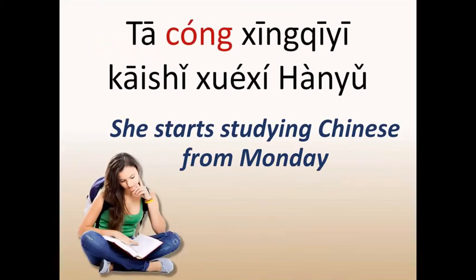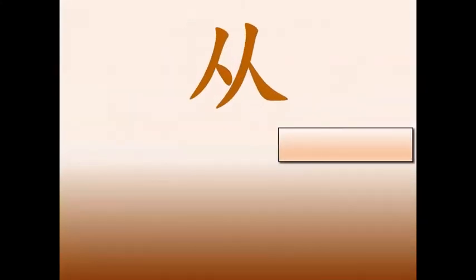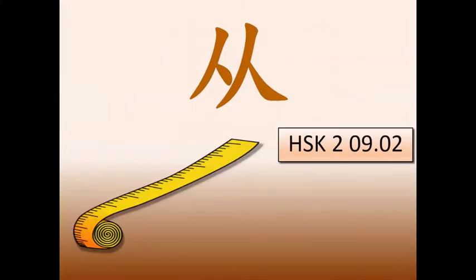So, with these examples, I hope that you understand much better this preposition 从 (cóng), meaning FROM.